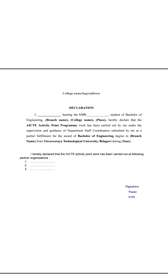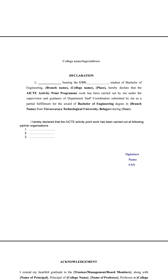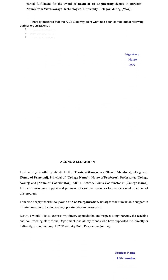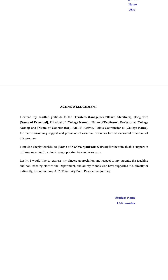You need to include your name and signature on the declaration sheet. After this, you need to acknowledge your college chairman, principal, HOD, and the AICTE activity points program coordinator — acknowledging that they have been helpful in carrying out this particular activity. This is the specific format you need to follow in order to submit your AICTE activity points program.